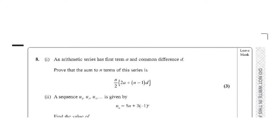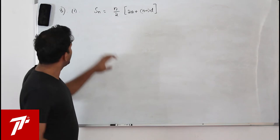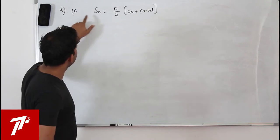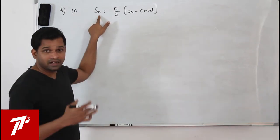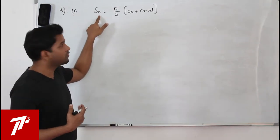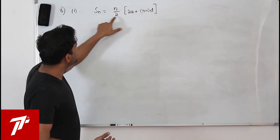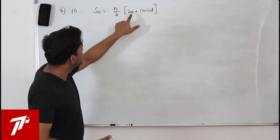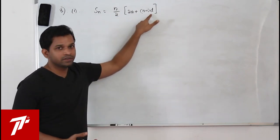Question number 8, Part A: an arithmetic series has first term A and common difference D. Prove that the sum of n terms is (n/2)(2A + (n minus 1)D). This is the formula for the sum of n terms of an arithmetic sequence.